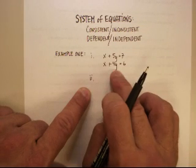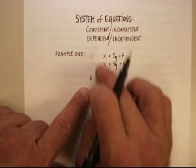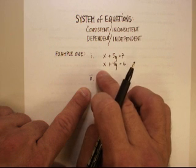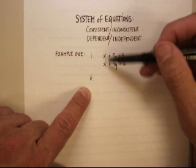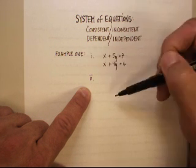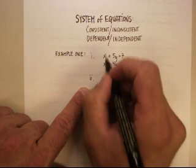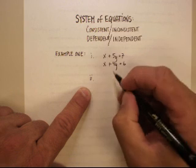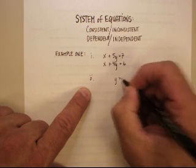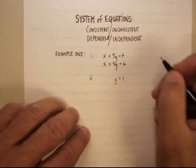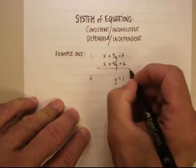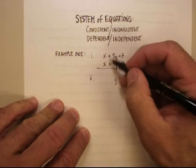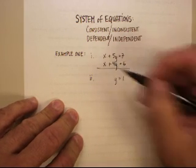Since these are both in standard form, I'm going to use the elimination method and get rid of the x's and solve for y and then resubstitute. So when I subtract x from x, I get zero x. 5y minus 4y just gives me y, and 7 minus 6 gives me 1. Now I'm going to substitute 1 back into one of these equations and solve for x.